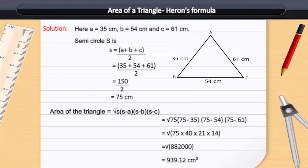Area of the triangle is equal to square root of S multiplied by S minus A multiplied by S minus B multiplied by S minus C, is equal to square root of 75 multiplied by 75 minus 35 multiplied by 75 minus 54 multiplied by 75 minus 61.